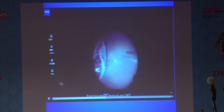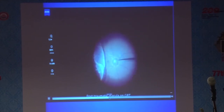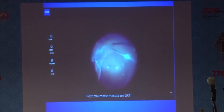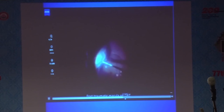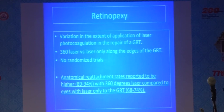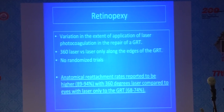Once you inject the PFCL, keep it posterior to the posterior flap, as that will act as a third hand and facilitate peripheral base dissection. The standard steps are then completed as shown in the previous surgery. Regarding retinopexy, the question is whether to perform a 360-degree laser or to laser only the giant tear. There is wide variation in practice and no randomized trials, but anatomic reattachment rates are reported to be higher with 360-degree laser compared to laser applied to the giant tear alone.